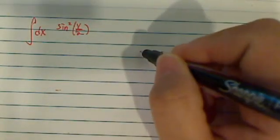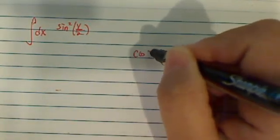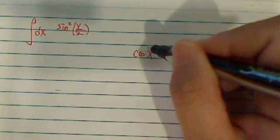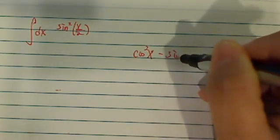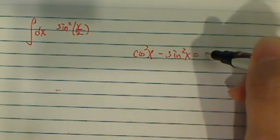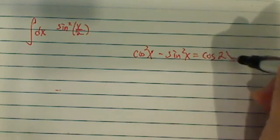To integrate sine squared of x/2, it's not too difficult if you realize that cosine squared x minus sine squared x equals cosine of 2x.